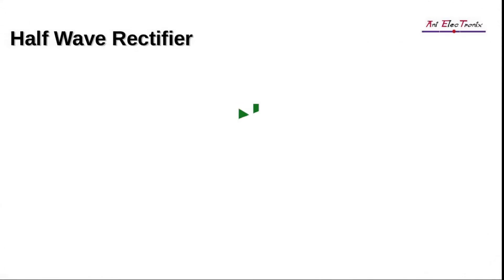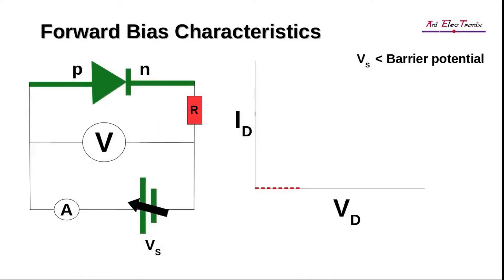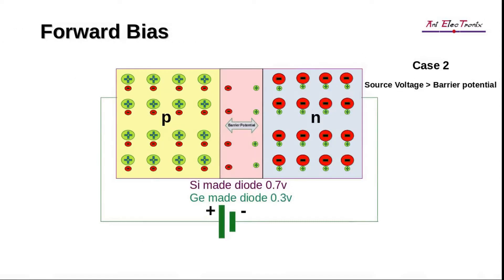All we need is a diode for the half-wave rectifier. Refer back to the forward bias characteristics of junction diodes. The diode will begin conducting when the source voltage crosses its barrier potential.